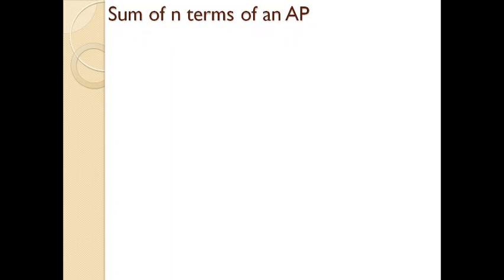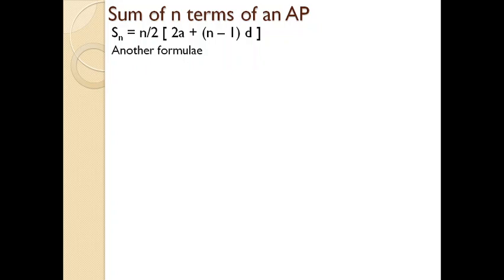We all know in arithmetic progression there is a, d, and n. Let a be the first term and d be the common difference. Then the sum of n terms is: S_n = (n/2) × [2a + (n−1)d]. There is another formula for finding the sum of n terms of an arithmetic progression: S_n = (n/2) × (first term + last term).